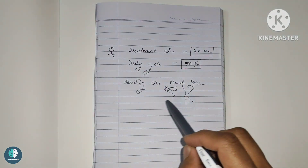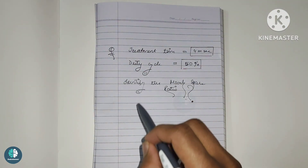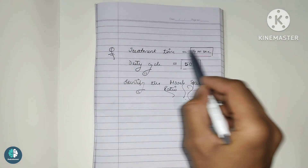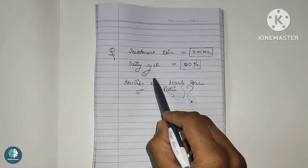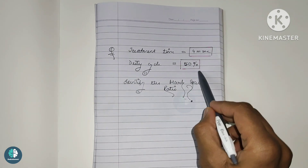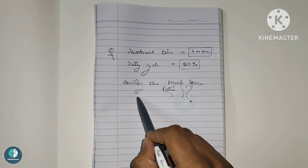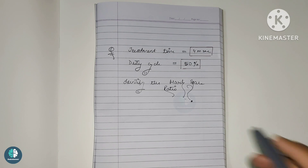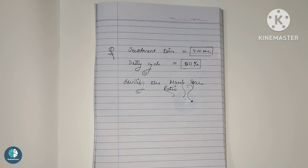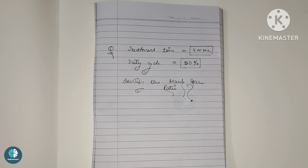So here is a question for you. The treatment time is 4 milliseconds and the duty cycle is 50%. Using the same method as the previous example, calculate the mark space ratio. Tell me the answer in the comments below.